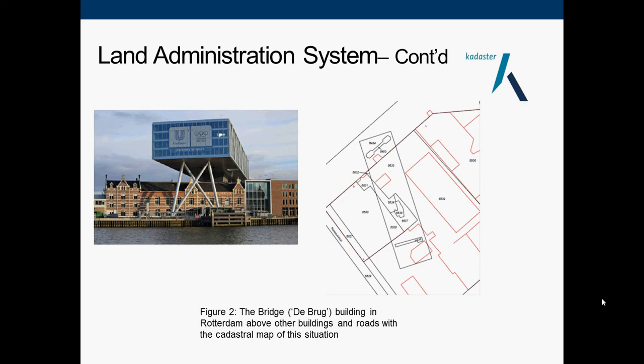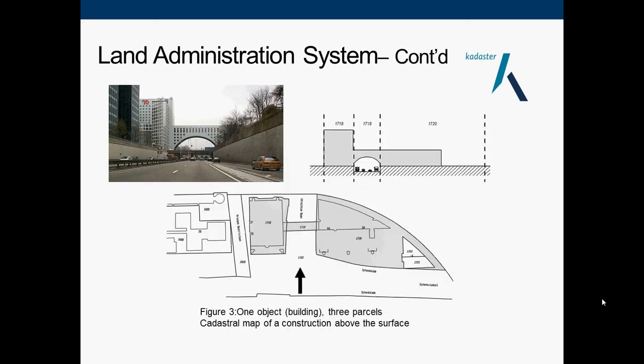Here is an example of a 3D cadastre. You can see a building over roads and other buildings, and on the right we can see that situation represented in a cadastre map. Here is another example showing three parcels in a cadastre map that are positioned over the surface of highways and other buildings.